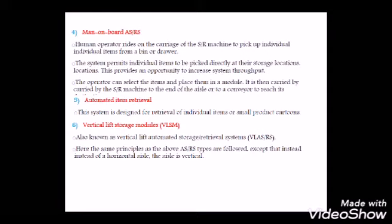The vertical lift storage system is similar to the horizontal ASRS except that in this case we also have space utilized in the vertical direction. The same principle as the ASRS system is followed, except that instead of a horizontal aisle we have a vertical ASL. The ASL refers to the small vertical lines of racks arranged in a row — the same arrangement used horizontally can also be configured in the vertical direction.